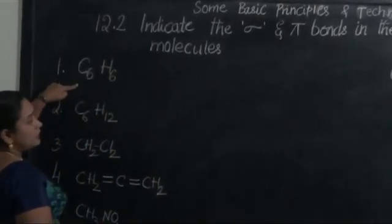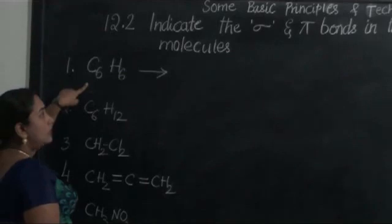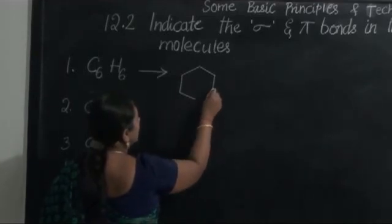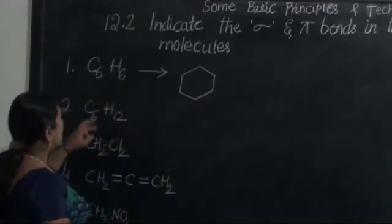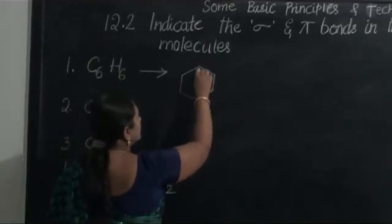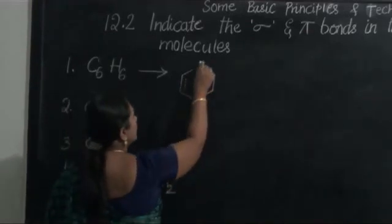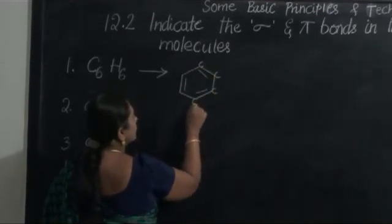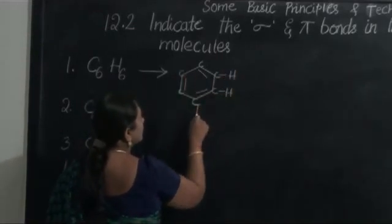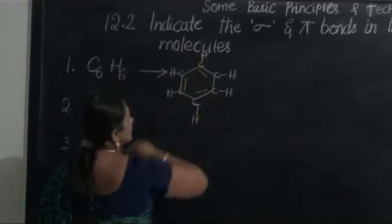First, look at the formula and based on that, try to write the structure of that compound. By looking at the structure, you will be in a position to write the number of sigma bonds and the covalent bonds. For example, C6H6 — we know this is benzene, which has alternating single and double bonds. At the corners there is a carbon atom and each carbon atom is linked with one hydrogen atom, giving the formula C6H6.